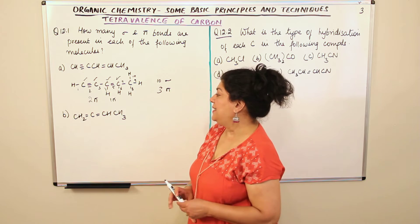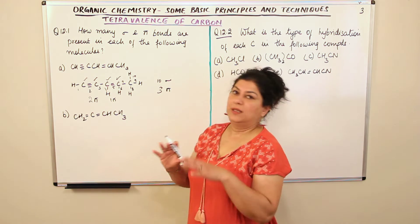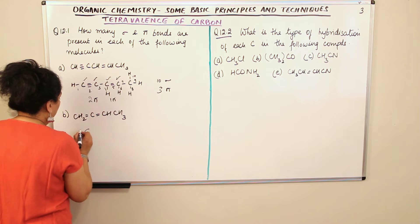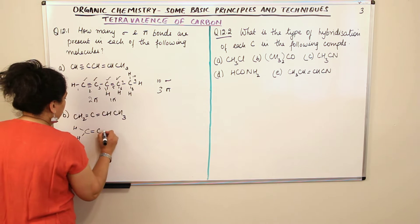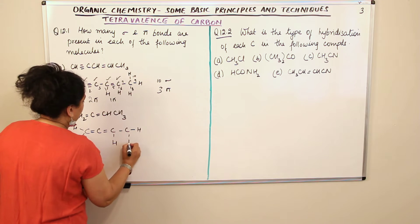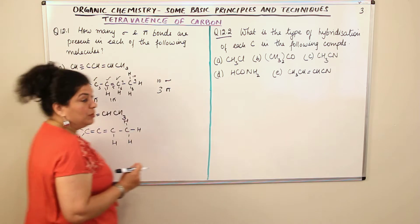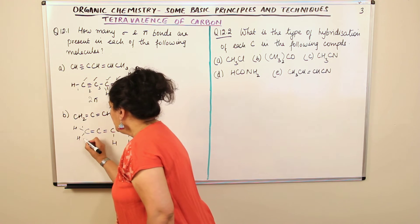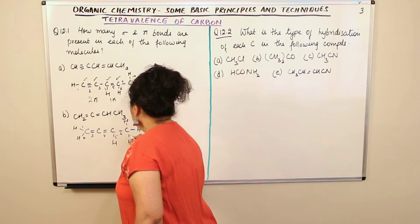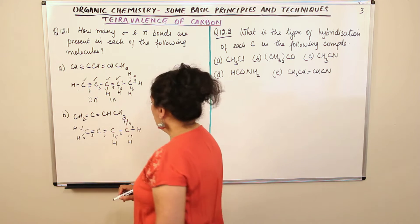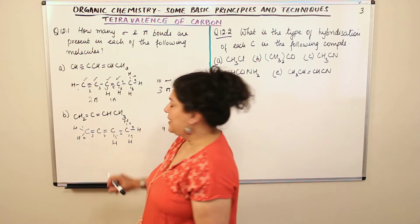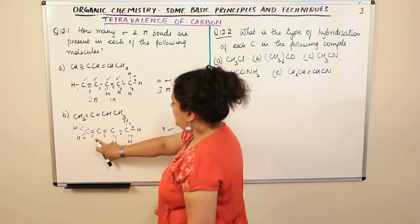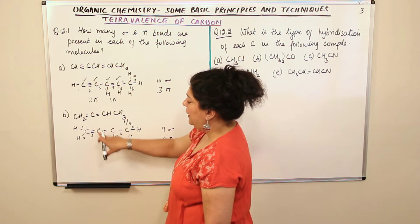Now for the second molecule, CH₂=C=CH-CH₃. Let us first write it in expanded form: C with two H's, double bond, C, double bond, C with one H, then C with three H's. Now count the sigma bonds: one, two, three, four, five, six, seven, eight, and nine — so there are nine sigma bonds. For pi bonds, each double bond contributes one pi bond (the first is sigma, the second is pi), and there are two double bonds, so there are two pi bonds in total.